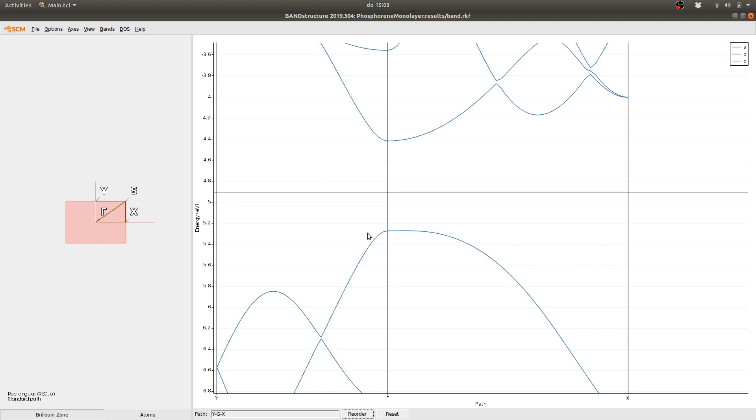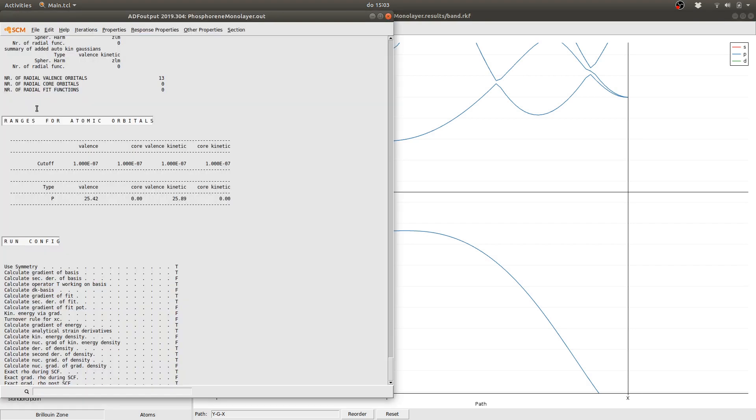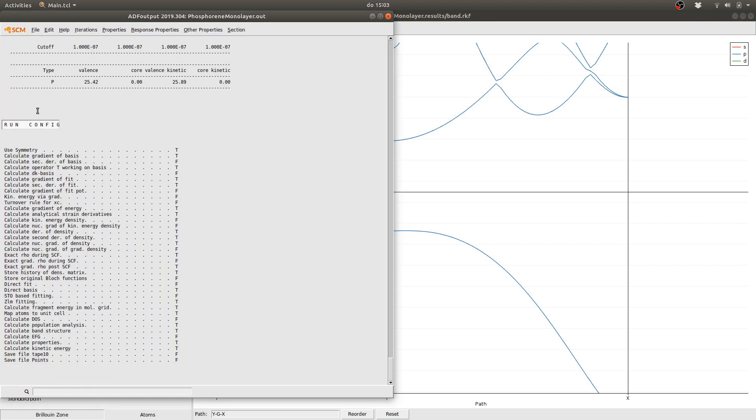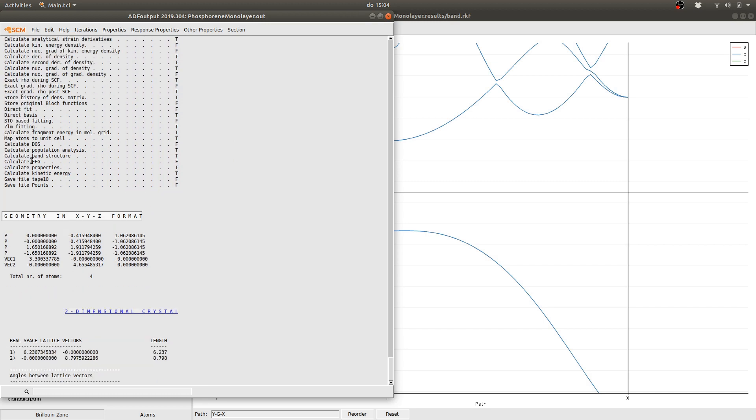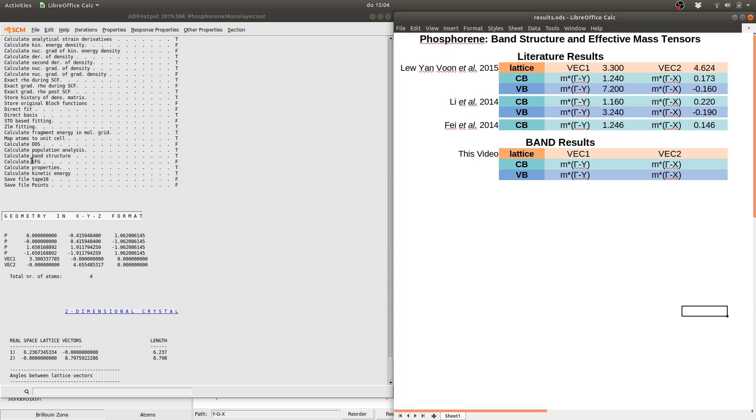To look at some more results we select SCM and output which opens the ADF output window. So if we scroll down somewhere towards the end we will find the final converged geometry. The first thing we're going to do is to compare that with what is reported in the reference paper. To do that I already prepared some results into a spreadsheet.